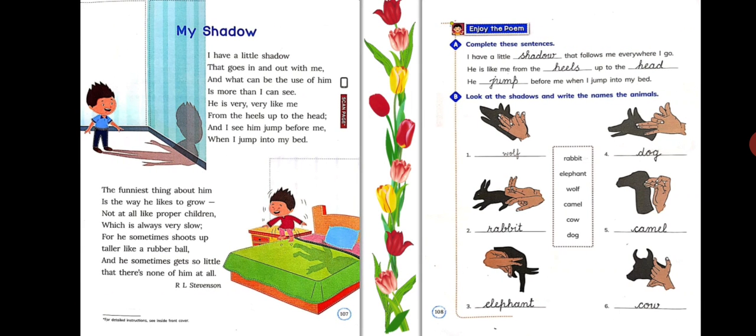I have a little shadow that goes in and out with me and what can be the use of him is more than I can see. He is very, very like me from the heels up to the head and I see him jump before me when I jump into my bed.